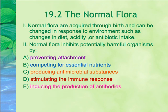Normal flora inhibits potentially harmful organisms by preventing attachment — keeping those pathogens from getting on or in you — and by competing for essential nutrients. If there's direct competition for only one resource, one of them is going to win. Normal flora also produces antimicrobial substances, secretes enzymes that can destroy other cells, and stimulates your immune response, inducing the production of antibodies so that your body is on a heightened state of alert.